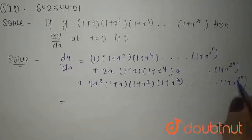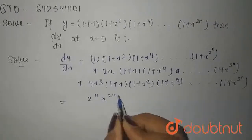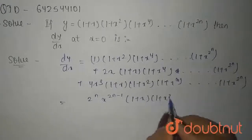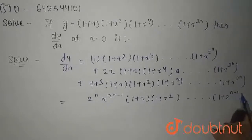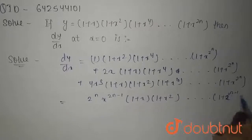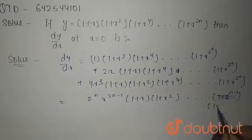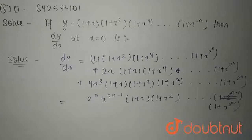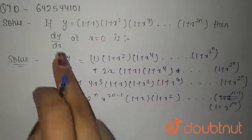So the sum of all these terms is nothing but 2^n times x to the power (2^n minus 1), that is (1 plus x)(1 plus x squared) up to (1 plus x to the power 2^n minus 1). That is, (1 plus x to the power 2^n minus 1), which is also a power of 2, giving us the sum of all these dy by dx terms.